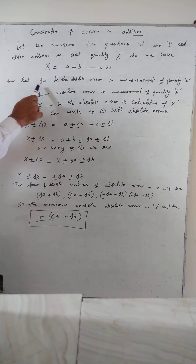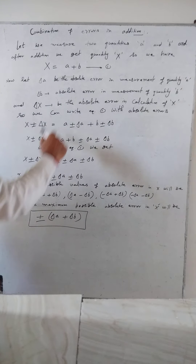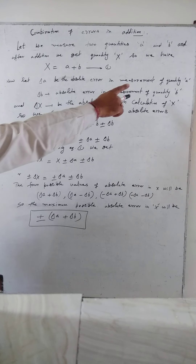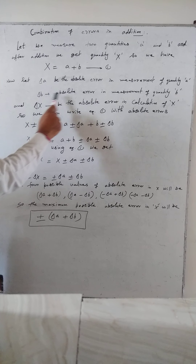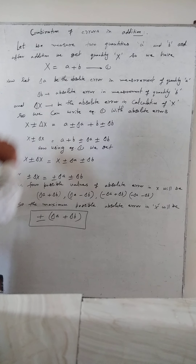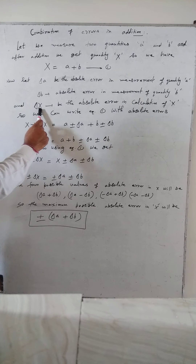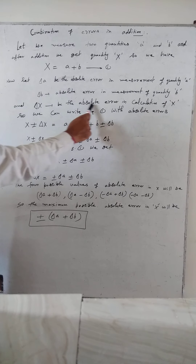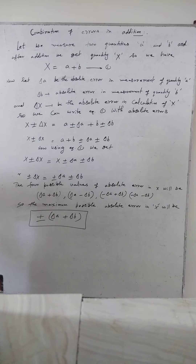Let delta A be the absolute error in the measurement of quantity A, delta B be the absolute error in the measurement of quantity B, and delta X be the absolute error in the calculation of X.